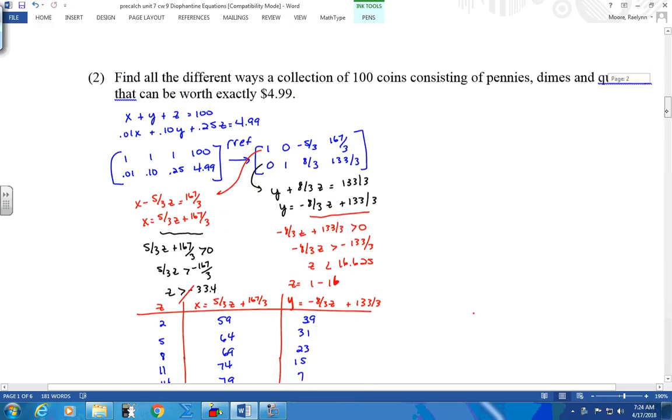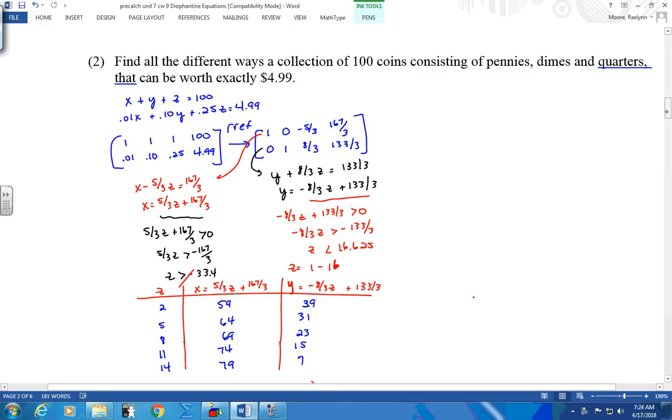All right. Now the coins, be careful with coins. The coins are like percentages. They have values on them. When you put in a penny, it's .01. When you put in a dime, .10. A quarter, .25.